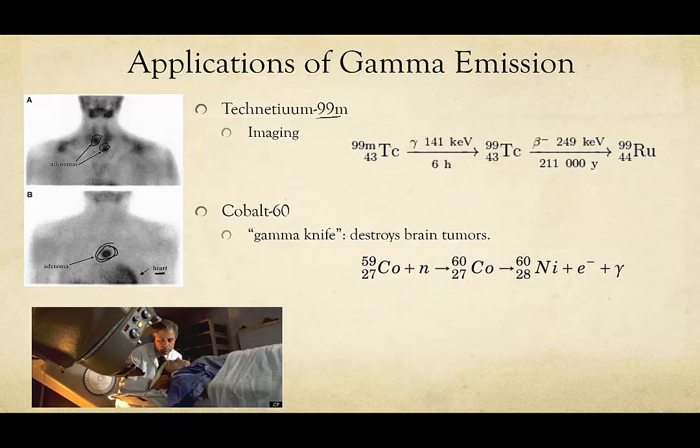And so the way that the gamma knife works is we use neutron bombardment to make cobalt go from cobalt-59 to cobalt-60, which is unstable. And then the cobalt-60 undergoes beta decay, and this becomes our treatment because you get beta decay and gamma radiation. And that gamma radiation can target the tumor in order to possibly kill it.